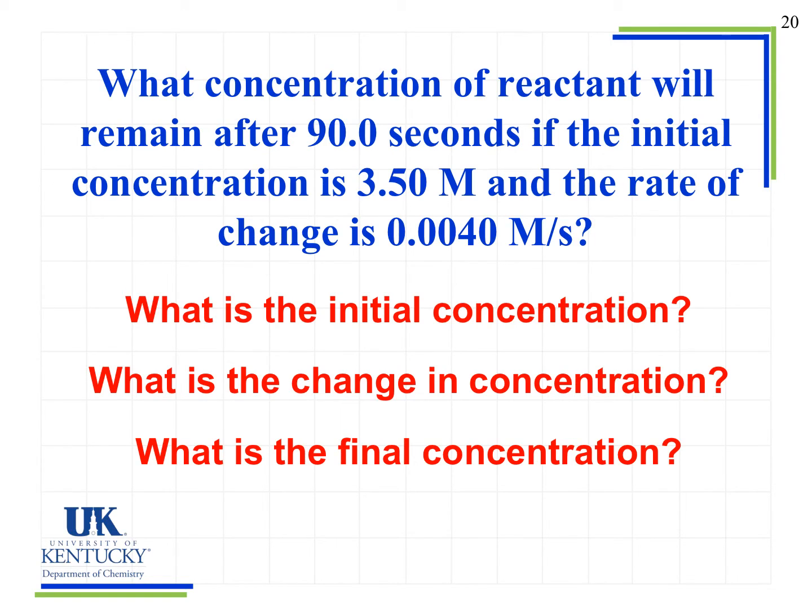Here's a problem that's similar but using a little bit different information. It says what concentration of reactant will remain after 90 seconds if the initial concentration is 3.50 molar and the rate of change is 0.0040 molar per second. Now we want to look at the problem to understand a few things about what's going on. First of all, notice it says what concentration of reactant will remain. So that implies that the amount is decreasing because if it's a reactant, it's being consumed in the reaction. So we know we're going to be losing that reactant.